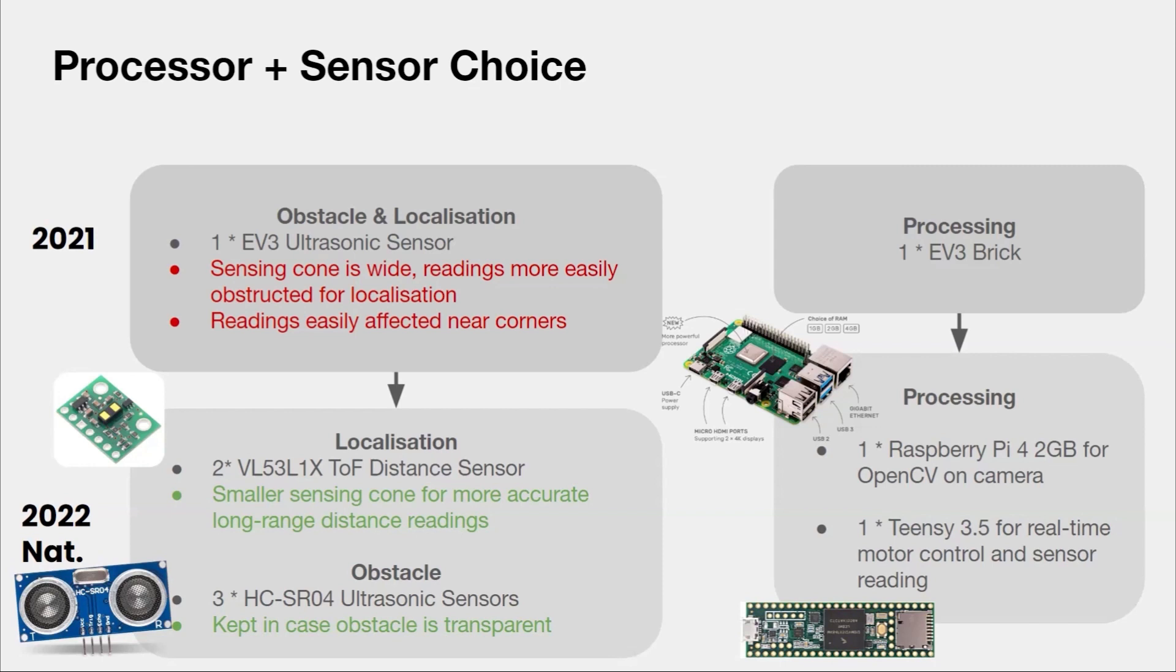To process the camera feed, we used the Raspberry Pi 4, which isn't massively powerful but is the most well-documented, which is good for debugging. To control the motors and read the sensors on time, regardless of how fast camera frames are being processed, we used a separate Teensy 3.5, which has a lot of I/O.